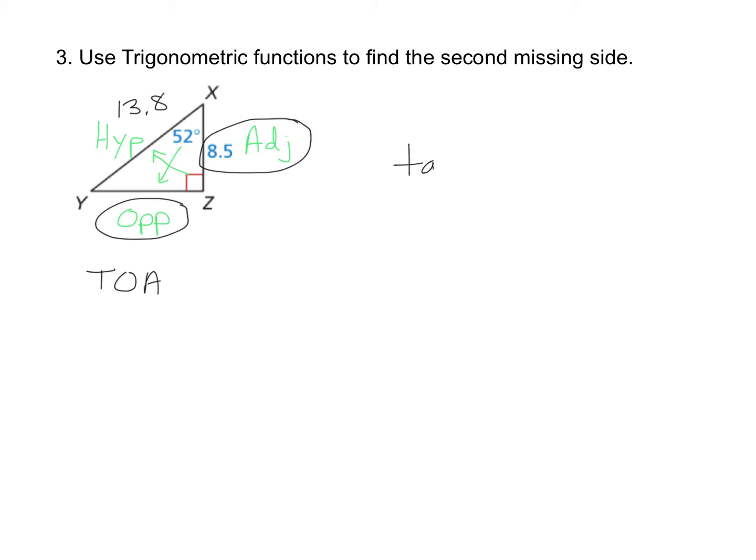That means the tangent of 52 degrees is equal to opposite, which is YZ, divided by adjacent, which is 8.5.